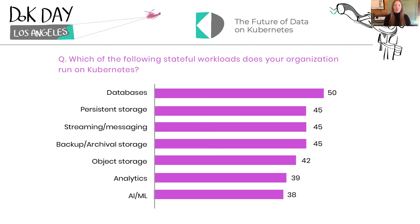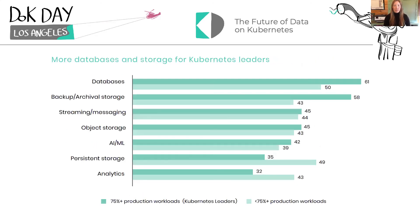Over half intend to increase the volume of stateful workloads by 30% or more in the next 12 months. Looking again at the cohort of Kubernetes leaders, databases are still in the number one spot and become even more important to this group, jumping 11%. Backup and archival jumps 15% to the number two spot, and we see AI and ML jump up a couple of spots from the bottom. The need for persistent storage and analytics seem to become less of a concern for this group, dropping to the bottom of the list.